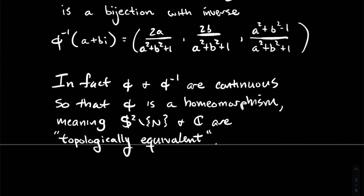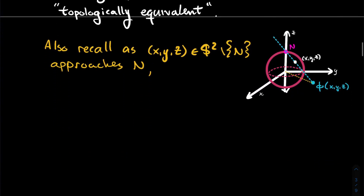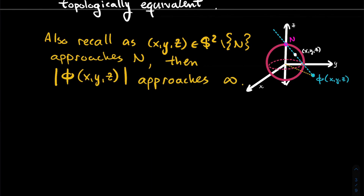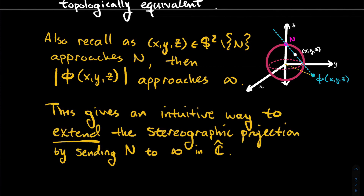That means the sphere with the north pole deleted and the complex plane are topologically equivalent spaces. Recall: if a point on the sphere approaches the north pole, then the modulus of its stereographic projection gets huge — the modulus goes to infinity. This gives us an intuitive way to extend the stereographic projection to the whole sphere, mapping into the extended complex plane.